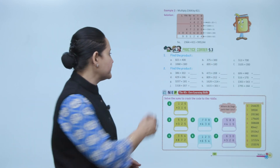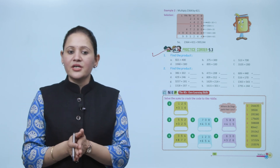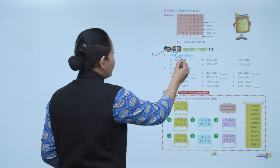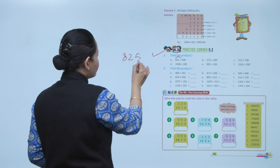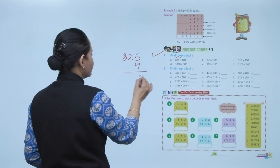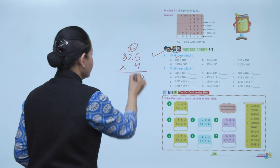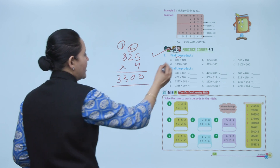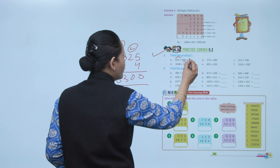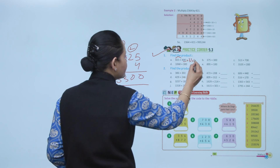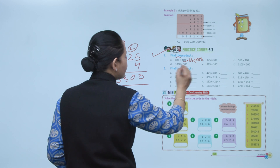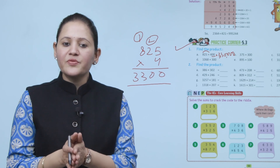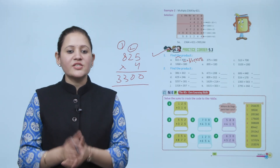Next is practice corner 5.3. Find the product: 825 multiplied by 400. First multiply 825 by 4 to get 3300, then put two zeros, giving 330,000. Practice all the questions of this exercise.